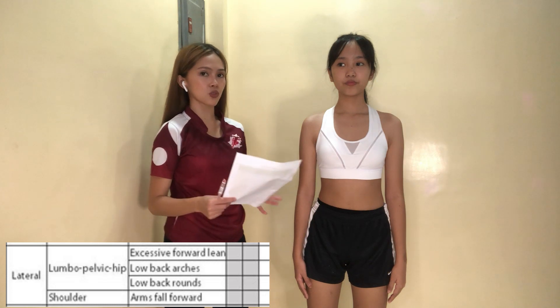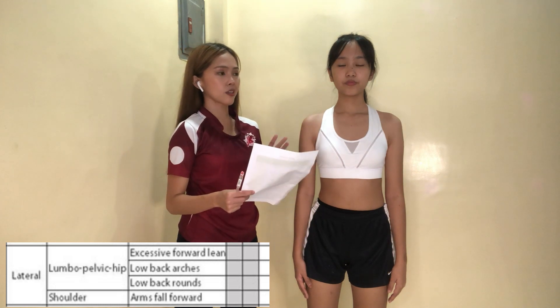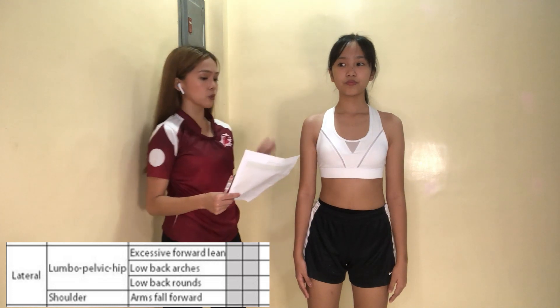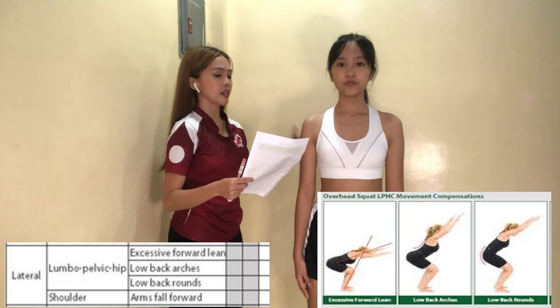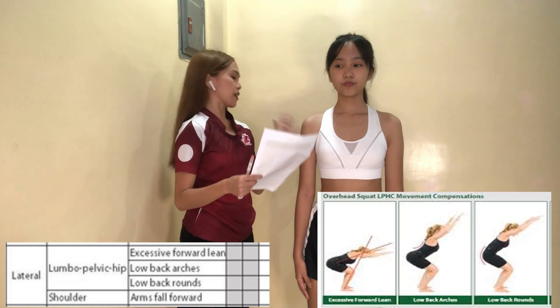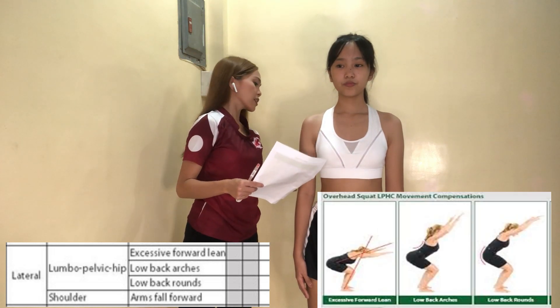From the lateral view, I'm going to stay at the side of my client. The kinetic checkpoints that need to be checked are the lumbar pelvic hip and the shoulder. The expected movement observations for the lumbar pelvic hip are: if there's an excessive forward lean, if there's a low back arch, or if there's a low back round.